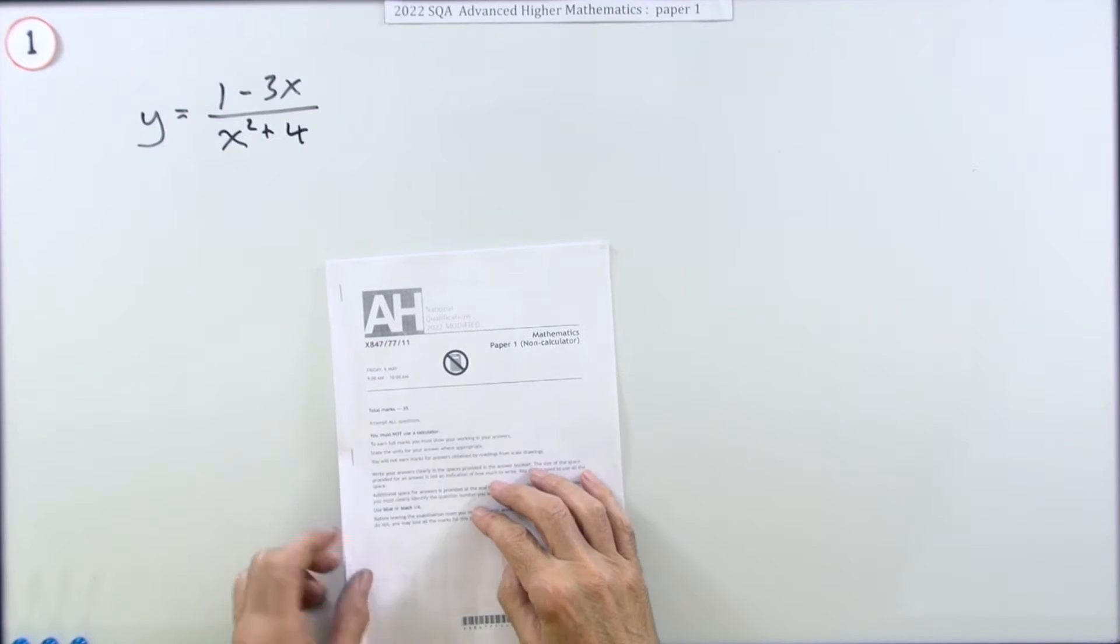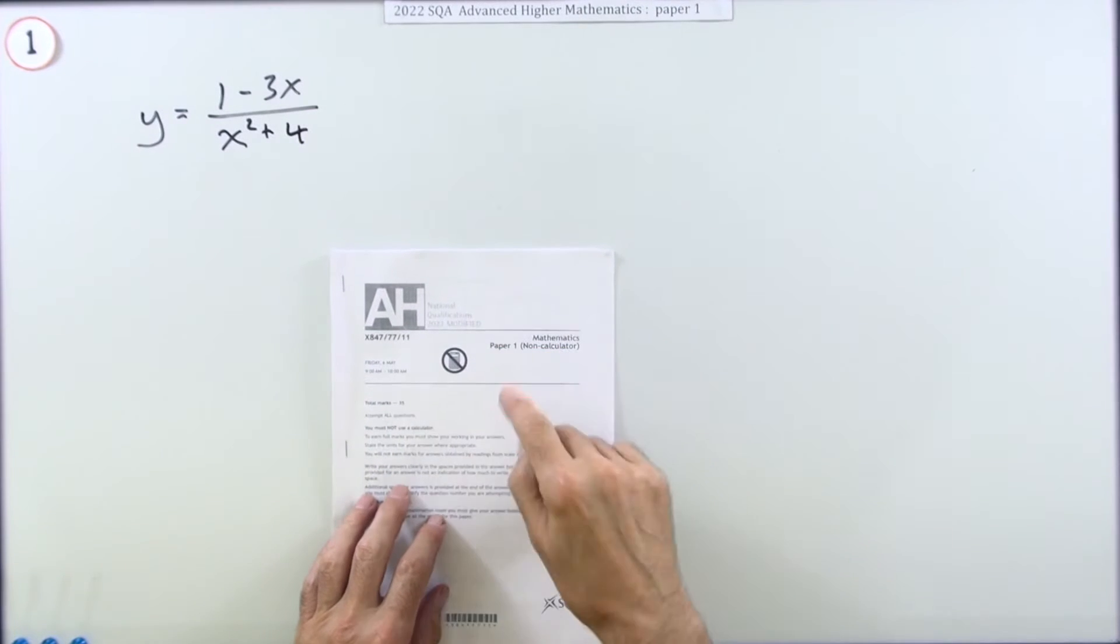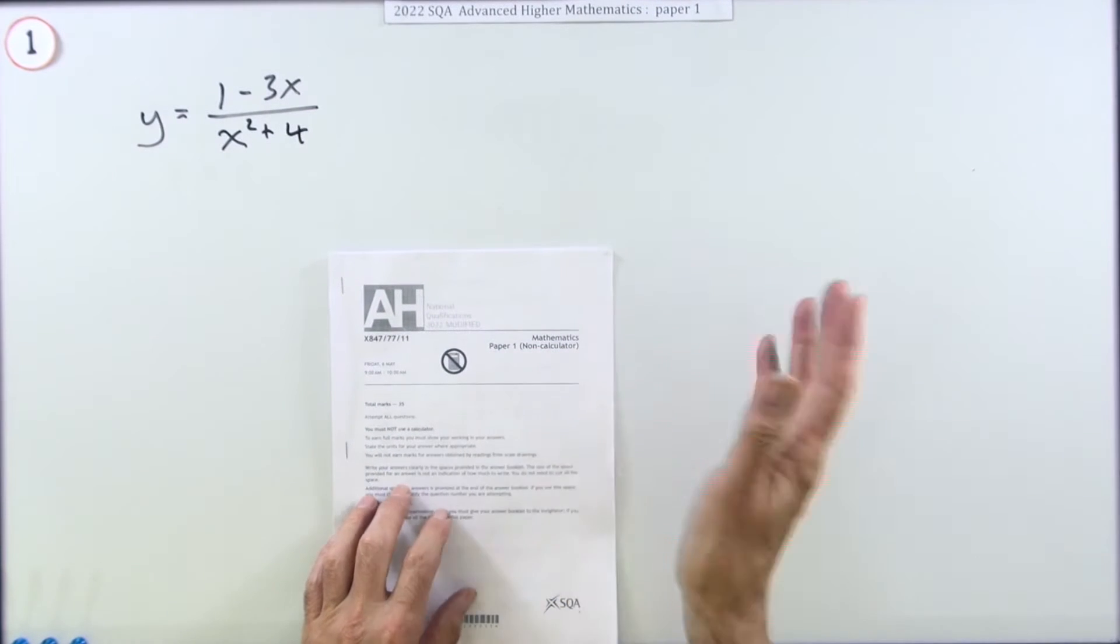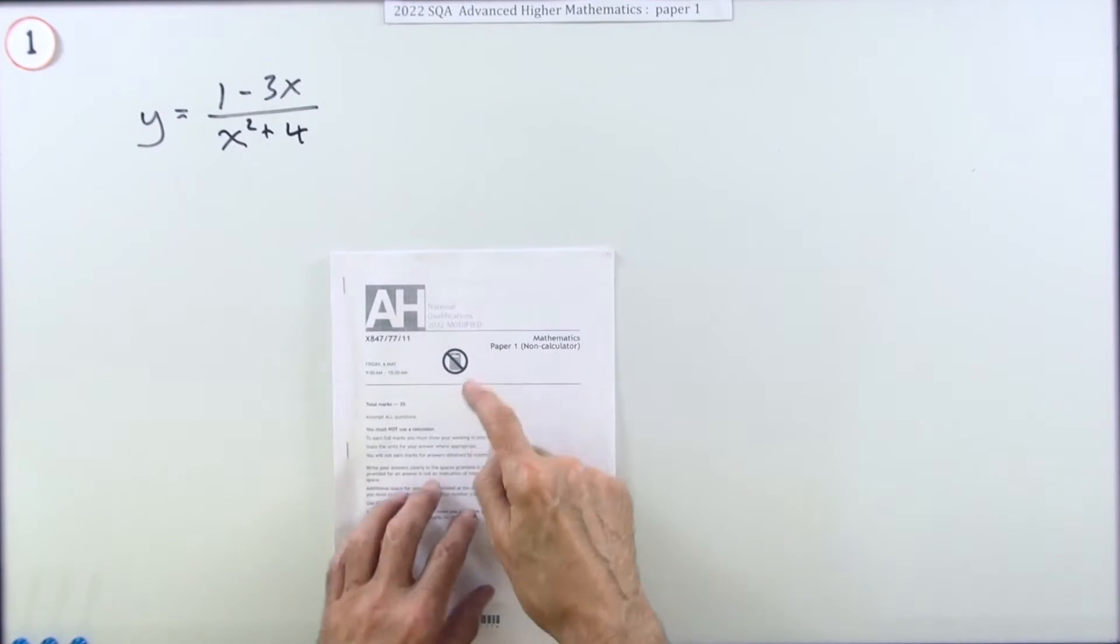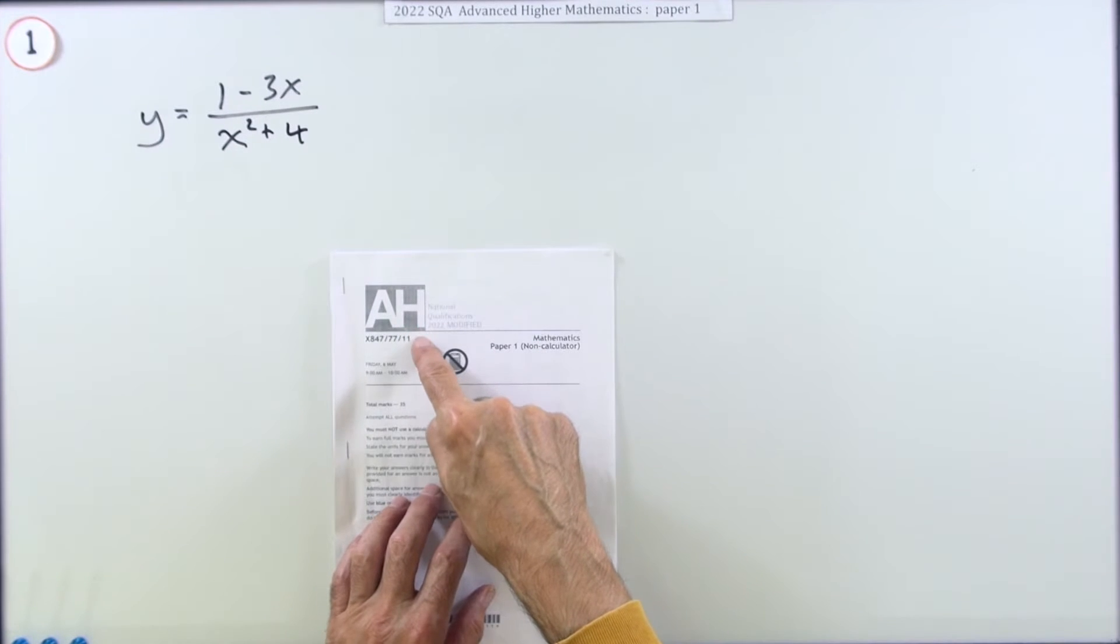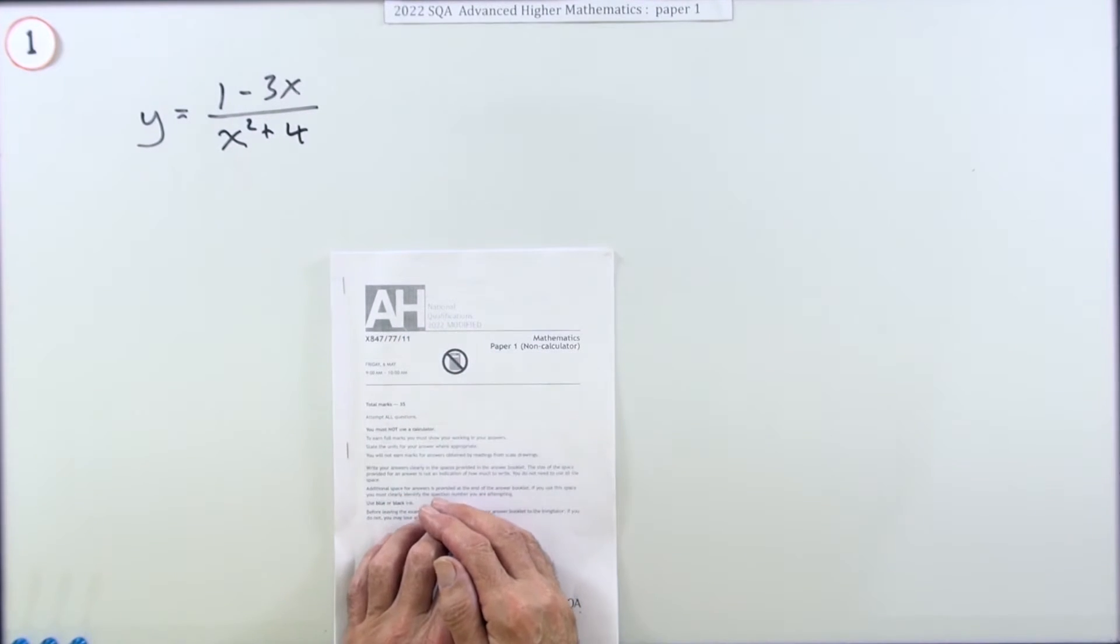So the 2022 Advanced Higher paper one. This time there's a change - paper one is non-calculator, then there'll be a paper two calculator. Not that you actually need a calculator, it's perfectly possible to design the Advanced Higher exam so it doesn't require the use of a calculator.